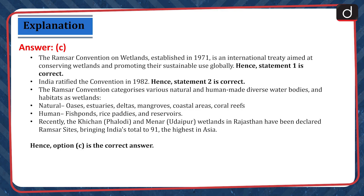The correct answer is option C. The Ramsar Convention on Wetlands, established in 1971, is an international treaty aimed at conserving wetlands and promoting their sustainable use globally. Hence, statement 1 is correct. India ratified the convention in 1982. Hence, statement 2 is correct.